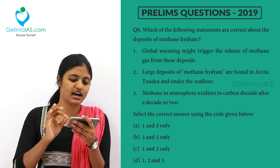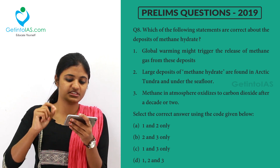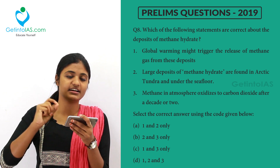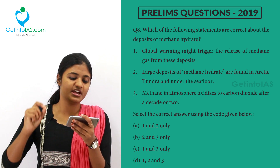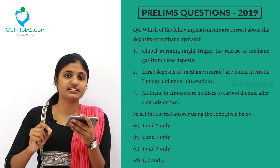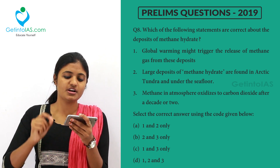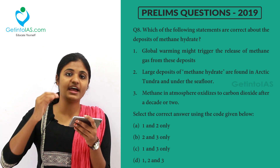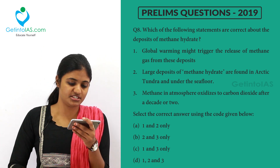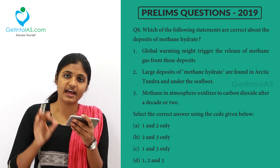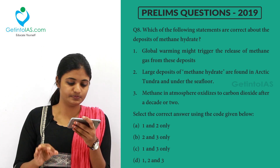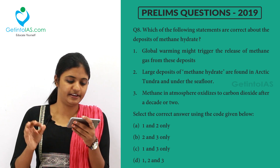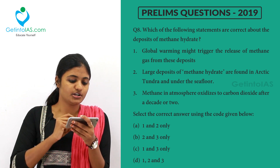Second statement: large deposits of methane hydrate are found in Arctic tundra and under the sea floor. Definitely correct — it is found in Arctic and Antarctic regions and under the sea floor. It is also found in the mangroves.